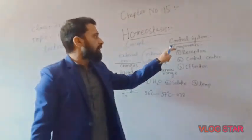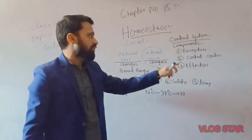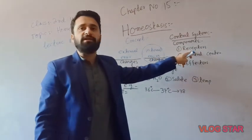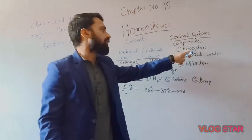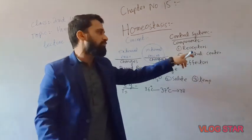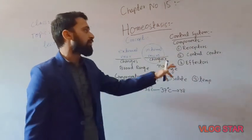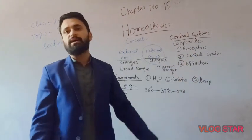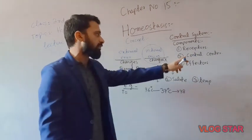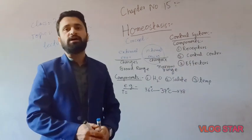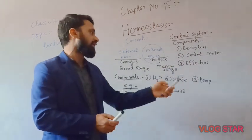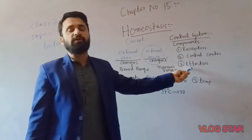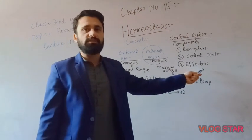Now the main components of the whole process are: receptors, which receive messages; the control center, which includes the brain and spinal cord, which processes and sends messages; and effectors, which are factors like glands and muscles that carry out the response.